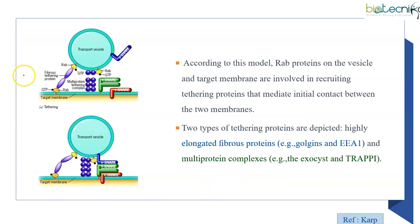Here I have a Rab model of explaining membrane fusion. As you can see, this is the transport vesicle and the target membrane. We have v-SNARE, t-SNARE, Rab GTP. Rab GTPs are connected by a group of tethering proteins. Then you have some multiprotein tethering complexes. Here examples are also provided: the fibrous tethering proteins golgin and EEA1, and multiprotein complexes include the exocyst and TRAPP1.